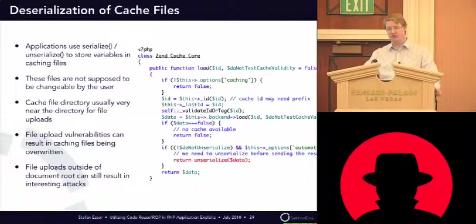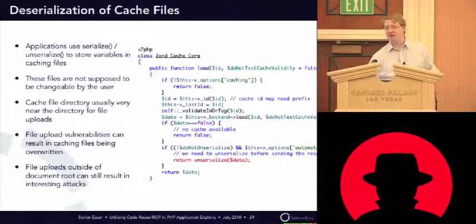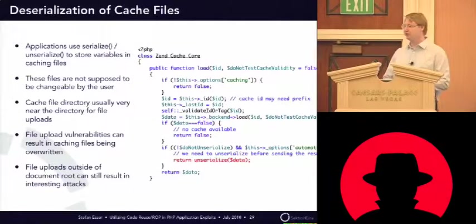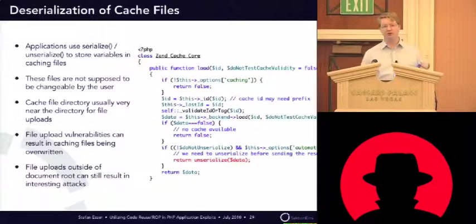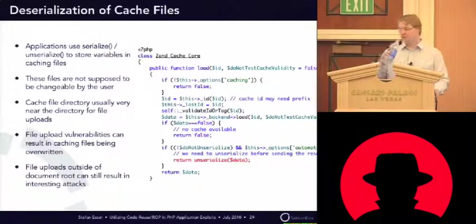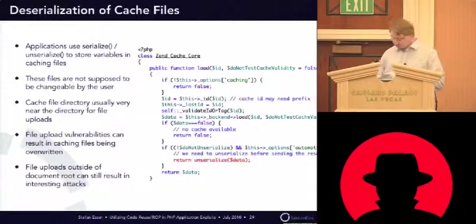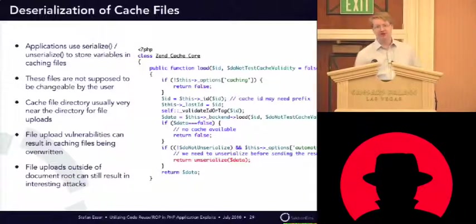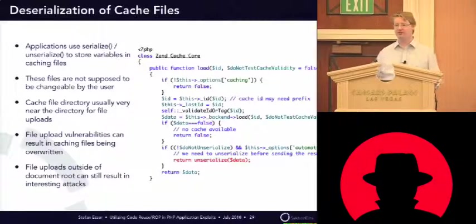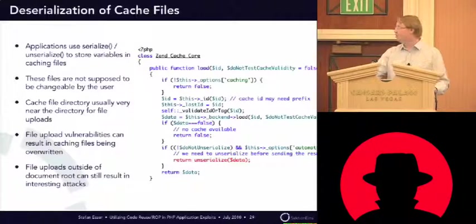What does this mean? This means first of all, when the application is able to store serialized data in files, there must be some directory on the web server that is writable, because otherwise it cannot be cached. It's not necessary that this is inside the document root — it can be anywhere on the server, maybe the temp directory or a subdirectory of the temp directory, but there must be a single directory that's writable.